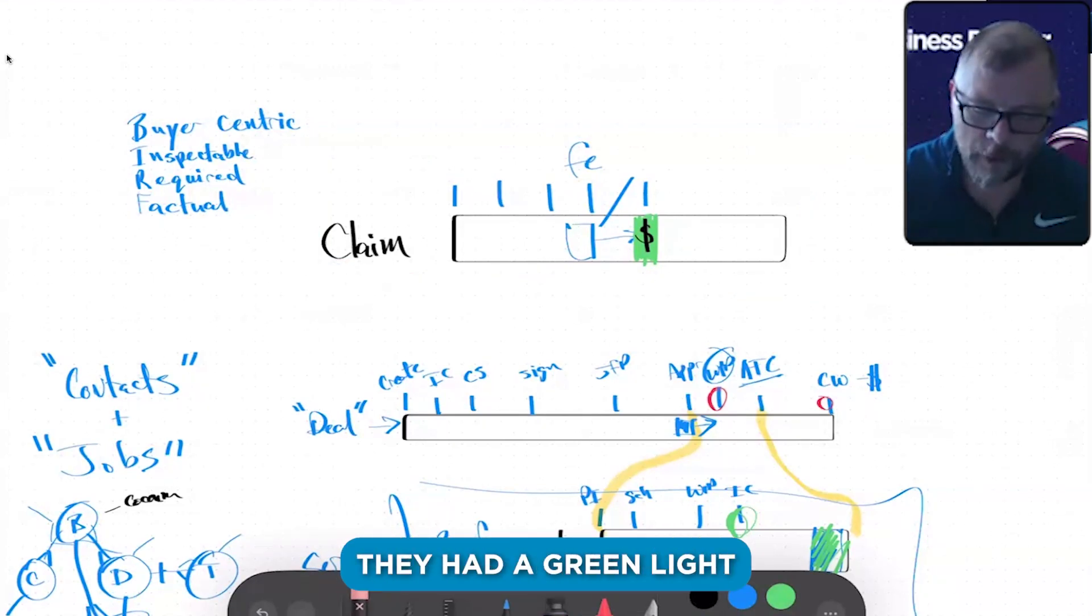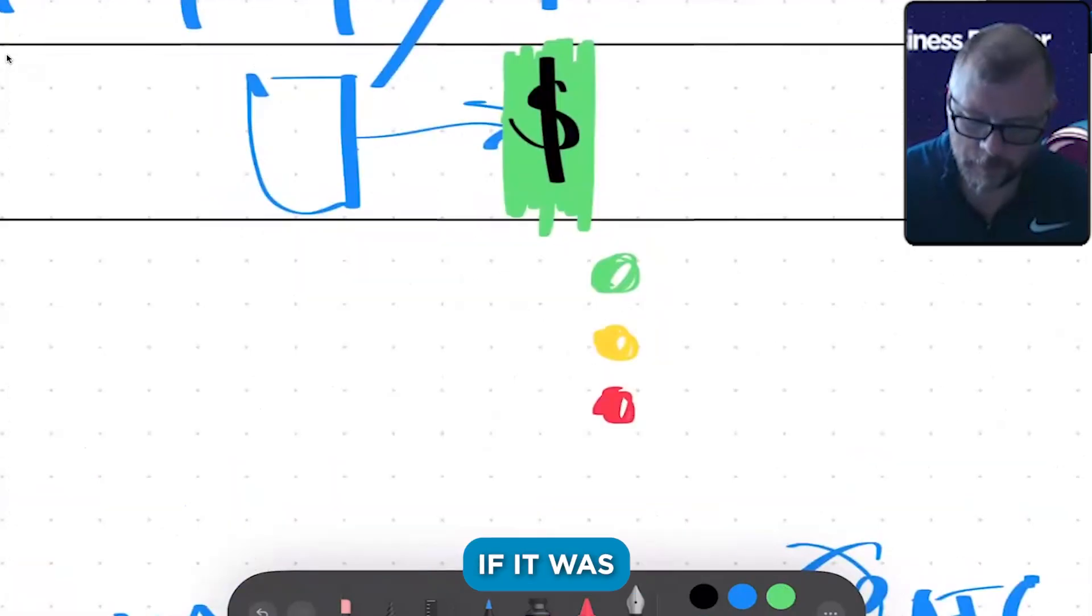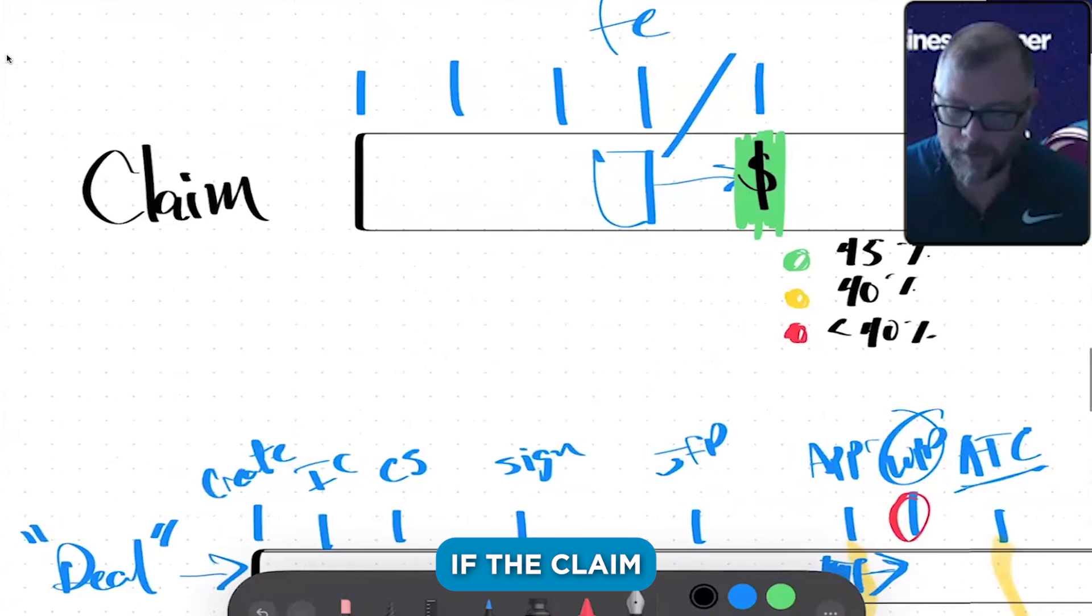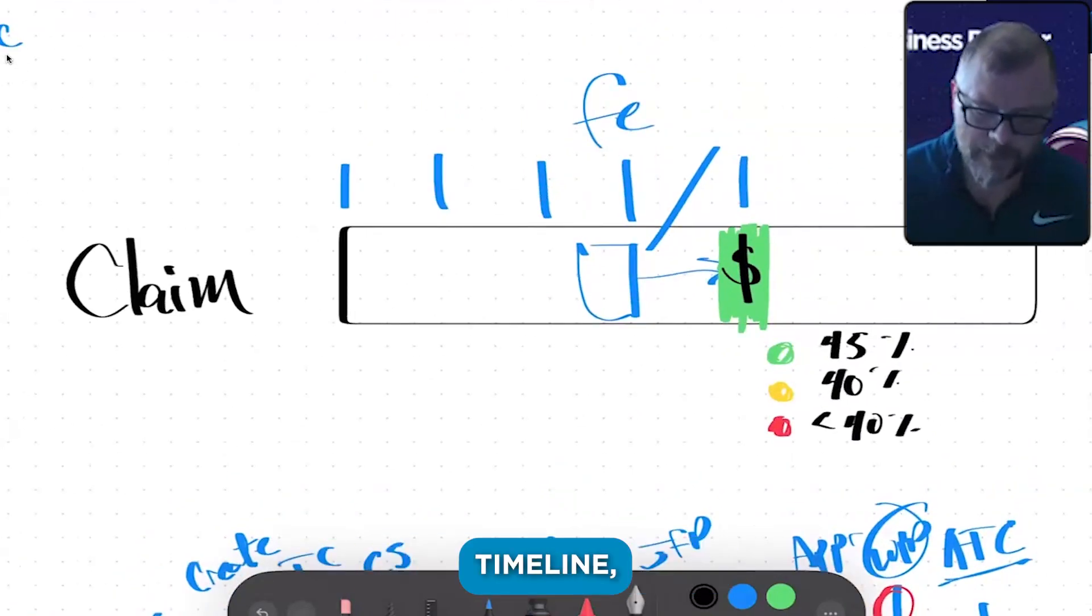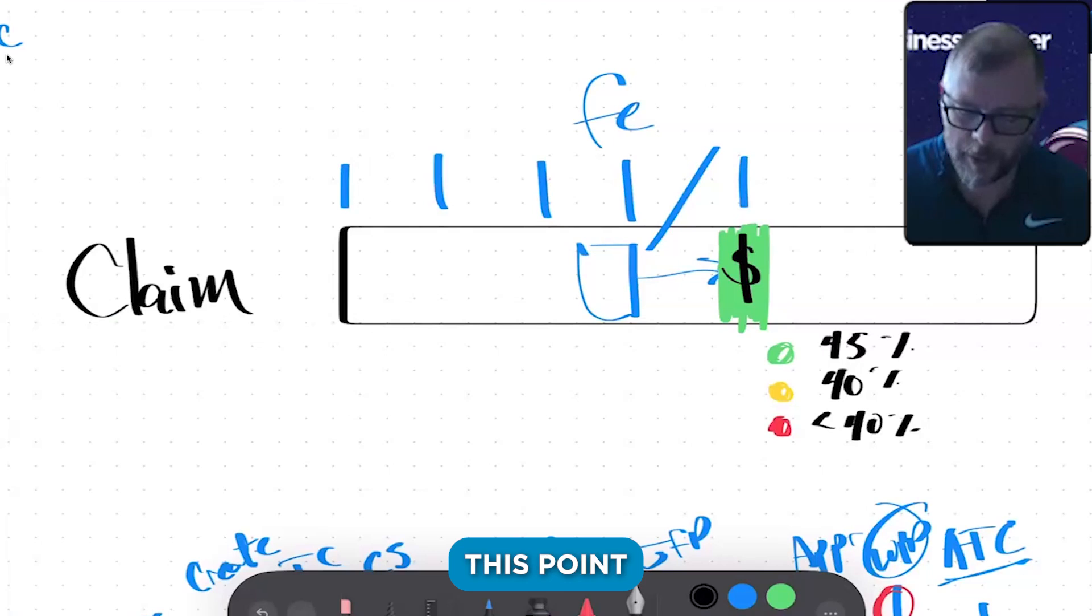Now they basically had three lights. They had a green light on it if it was a 45%, the yellow light if it was 40%, and they had a red light if it was under 40%. So they would not allow—if the claim object, so the claim timeline, the claim pipeline does not get past this point of getting to 40%—the deals, the work in progress and all that proceed.